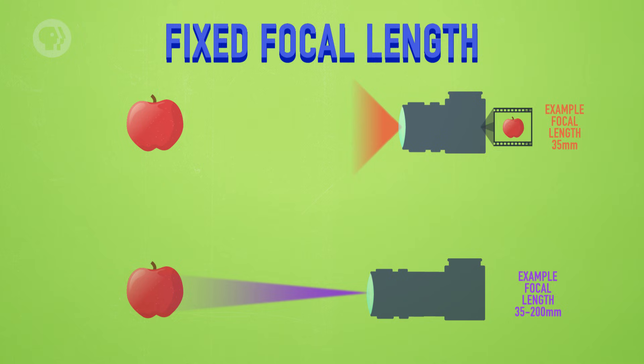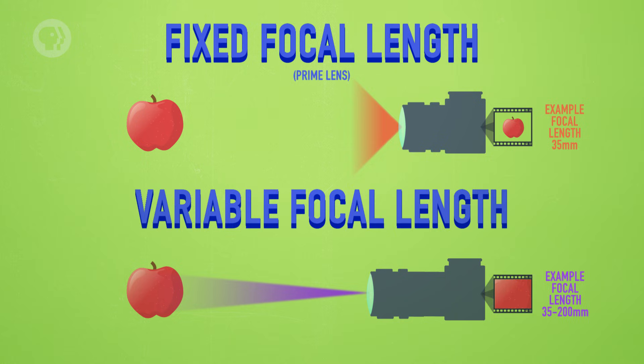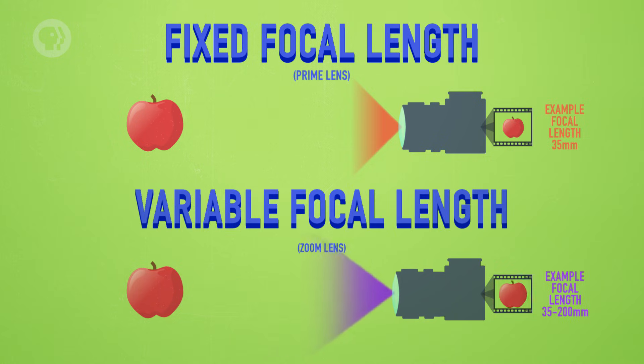A fixed focal length lens can be called a prime lens. It tends to have higher quality glass, because it's specialized for just one focal length. On the other hand, a variable focal length lens is more versatile — it's also called a zoom lens, because it can zoom in and out.